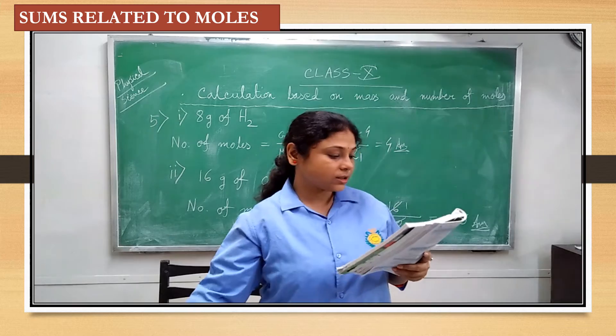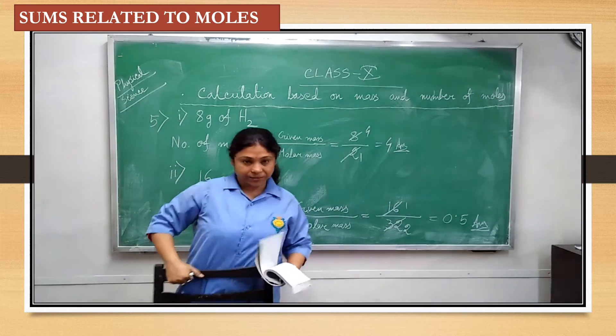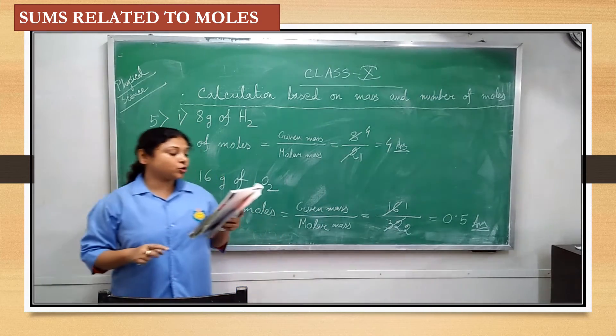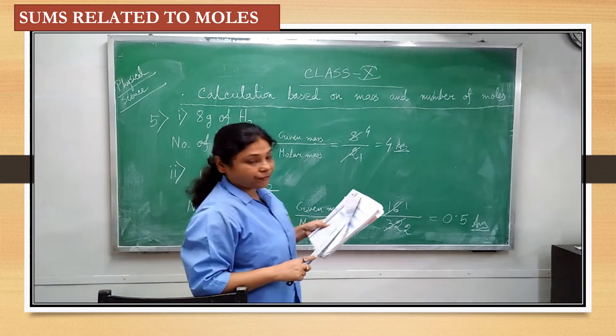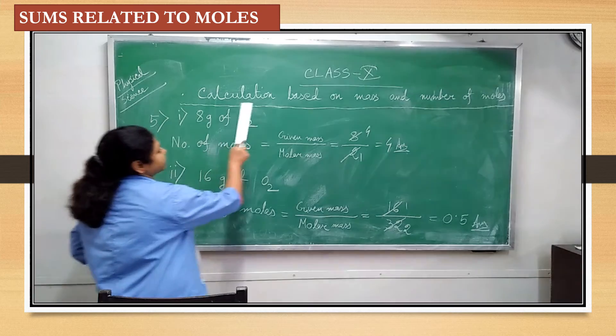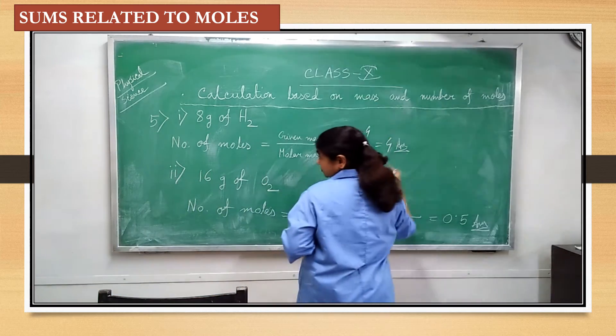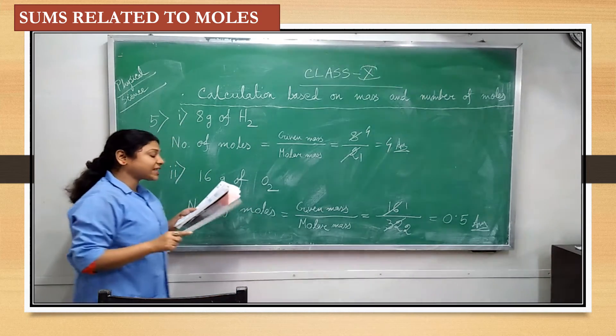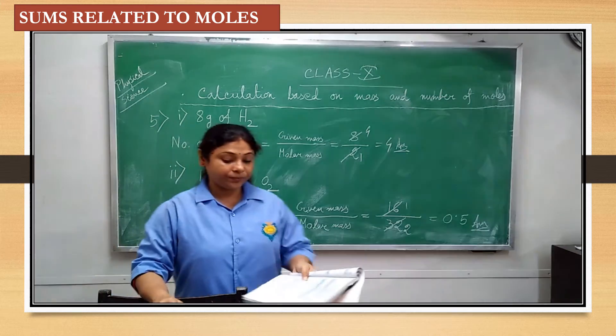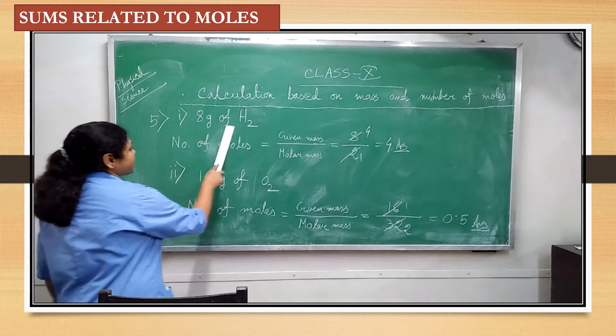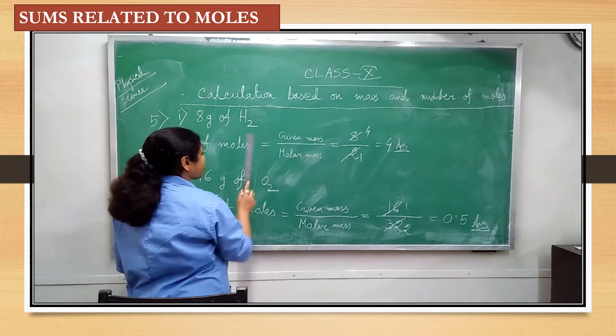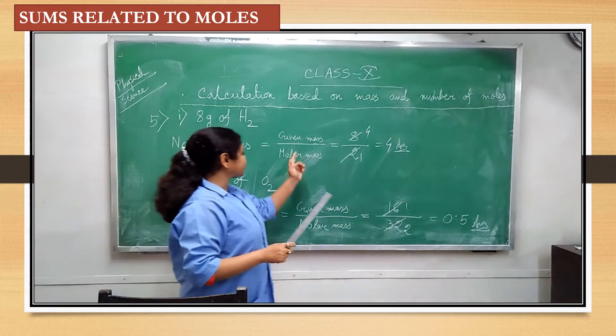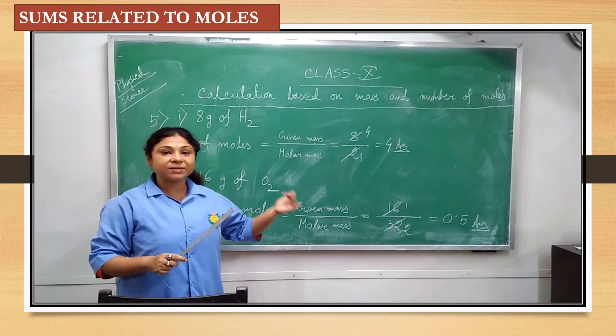Good morning students. So, we are continuing chemical exploration chapter. Here I am going to do number 5, page number 25 from chemical exploration chapter. Calculation based on mass and number of moles. Number 5 is now I want you to do. So, trying to find out, calculate the number of moles for the following. First sum is 8 gram of H2. So, number of moles is equal to given mass. Always remember this. When you have to calculate number of moles, formula is given mass divided by molar mass.